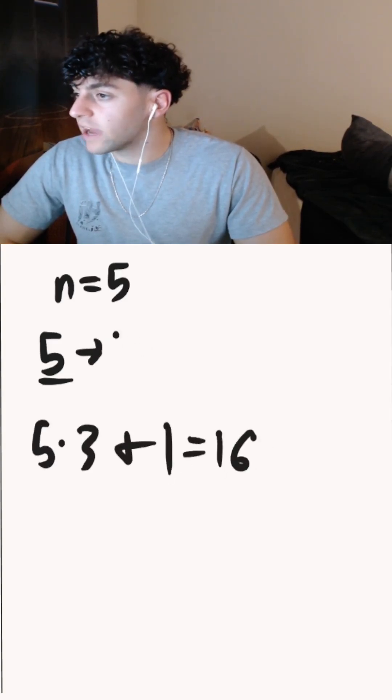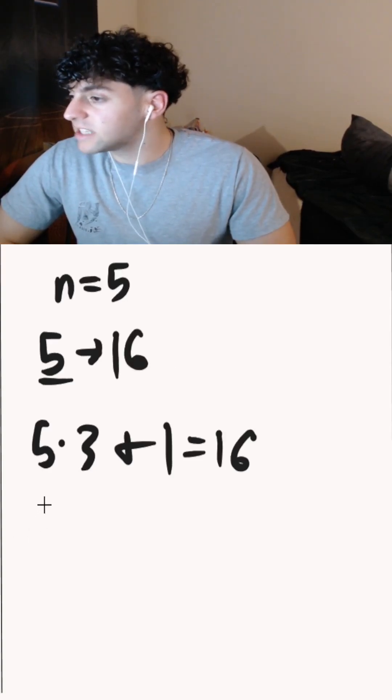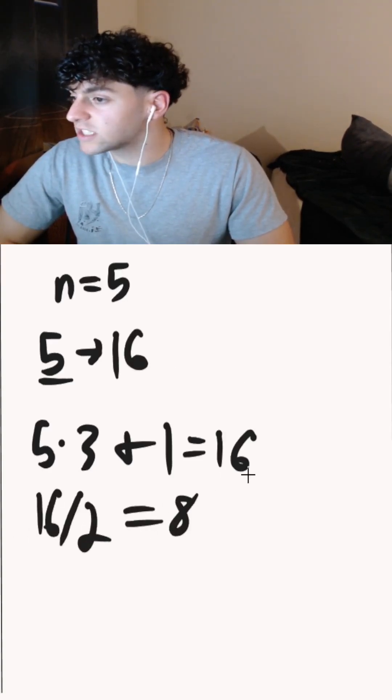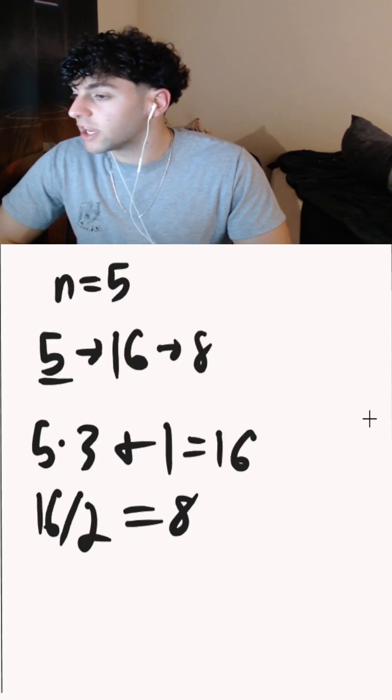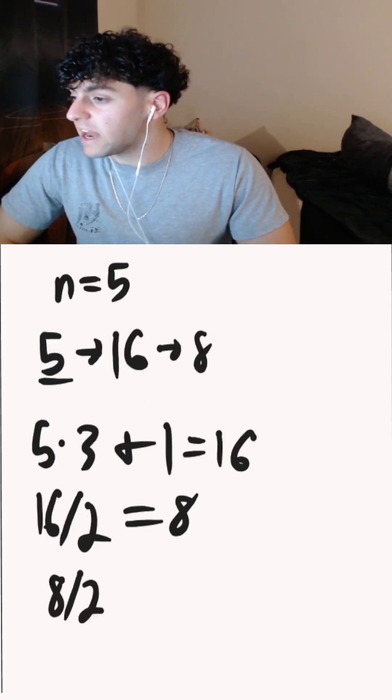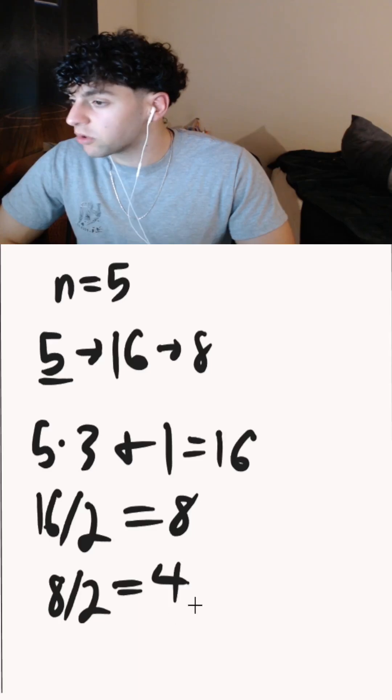So 16 will be our next number in the chain. And since 16 is even, what we're going to do is divide 16 by 2, which is going to give us 8. So 8 is going to be the next number in our chain. Again, 8 is even, so we're going to divide 8 by 2 to get our next number, which is equal to 4.